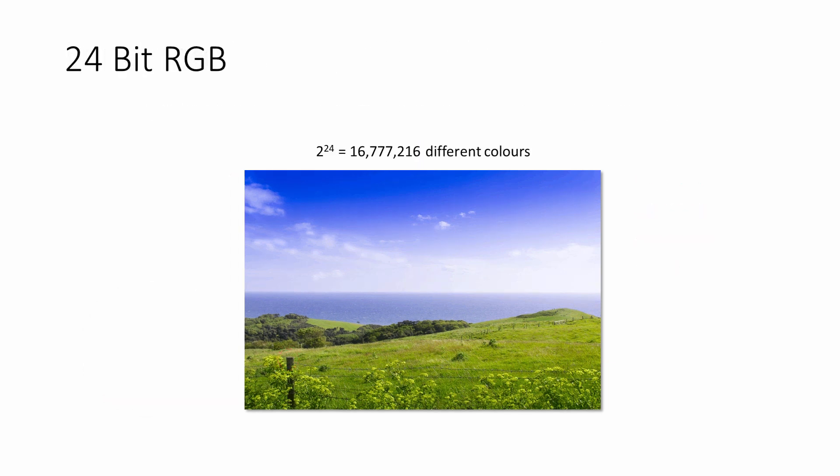When 24 bits are used to encode the colour of each pixel, there can be as many as 2 to the power 24, that's 16.7 million different colours. Notice that the banding in the sky is no longer visible in this 24-bit RGB image. The quality is much better.